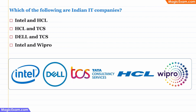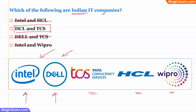Question: Which of the following are Indian IT companies? This is a very simple question — Intel and Dell are American companies, whereas TCS, HCL, and Wipro are Indian companies. Eliminating all answer choices that contain Intel or Dell leaves us with Option 2, which is HCL and TCS — both are Indian IT companies.